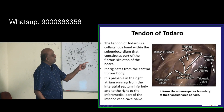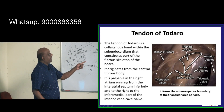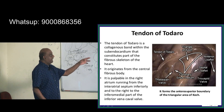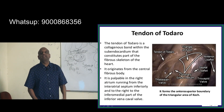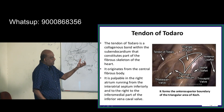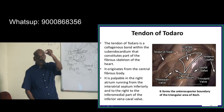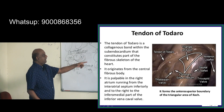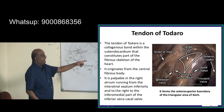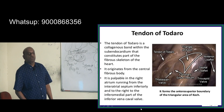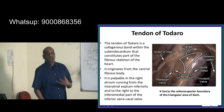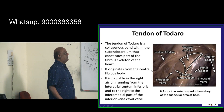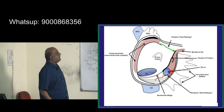The Tendon of Todaro is a collagenous band in the subendocardium and is part of the fibrous skeleton of the heart. It originates from the central fibrous tendon where the AV node is located, and passes inferomedially towards the inferior vena caval opening — guarded by the Eustachian valve. That is the story of the Tendon of Todaro.